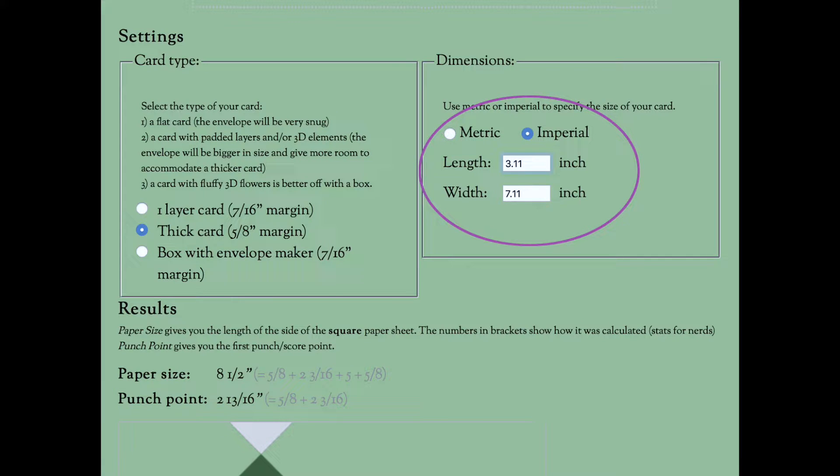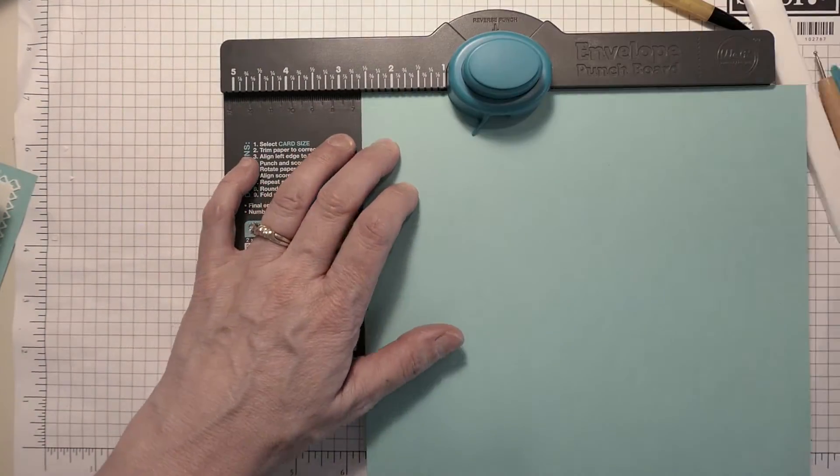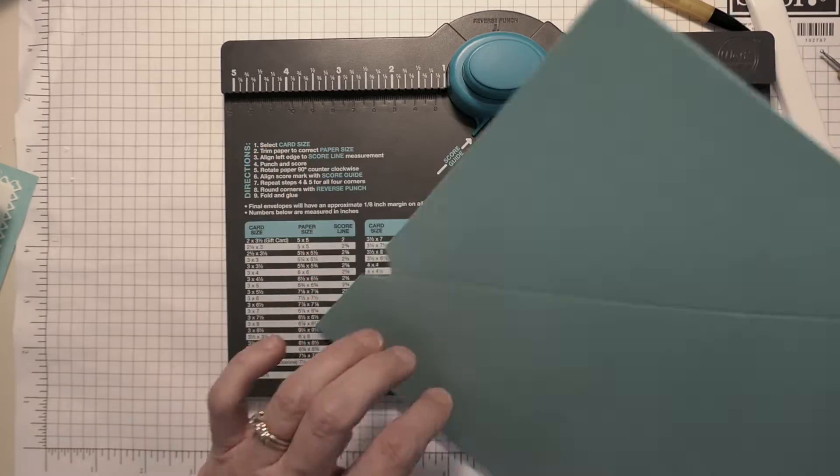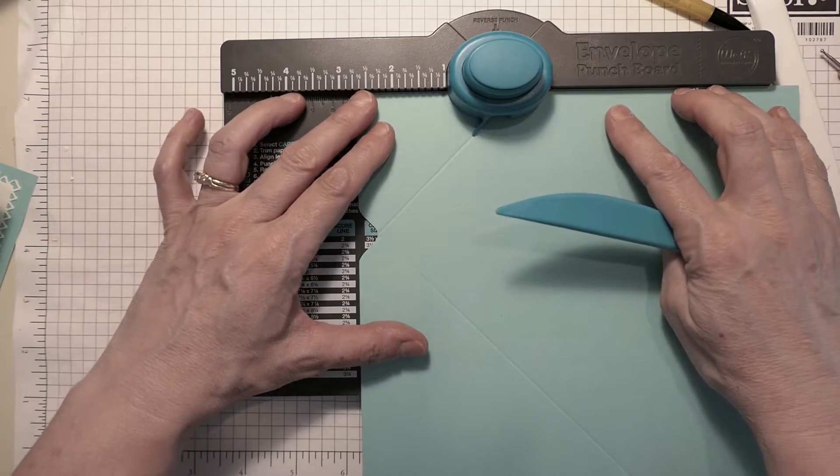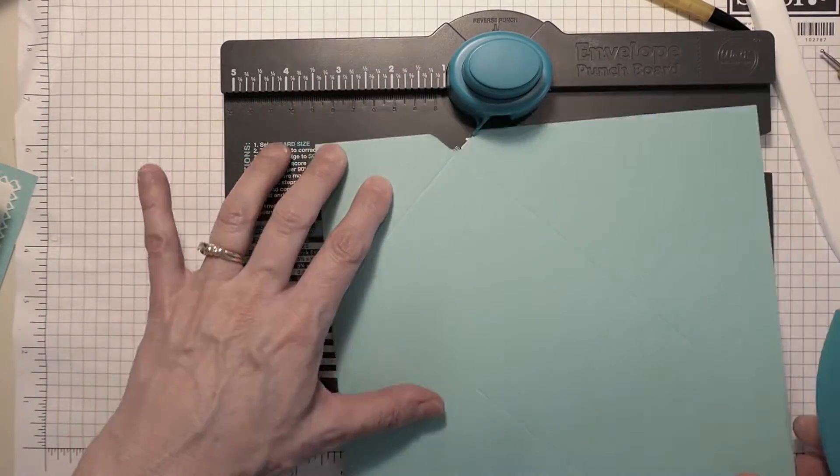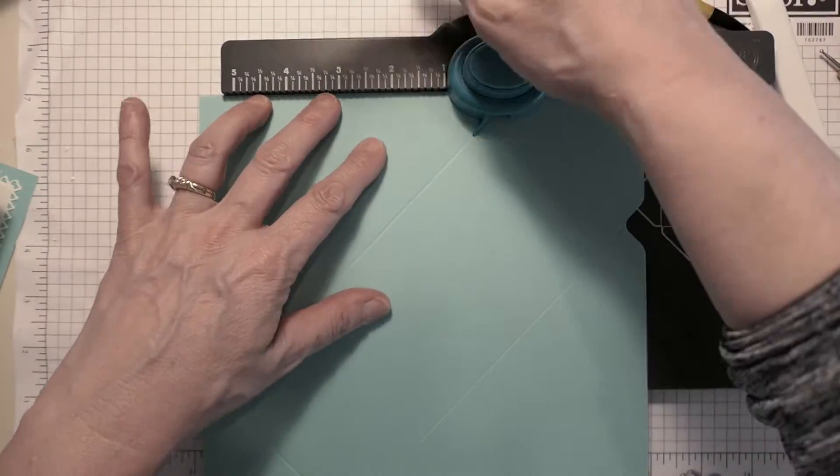You'll see here that I actually added just a little bit to make it a perfect eight and a half cut. Just following the guide of the punch point, I found that punch point on the punch board and just made an envelope as usual. Just so simple and easy.